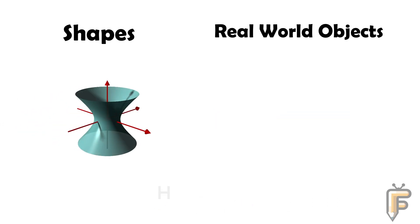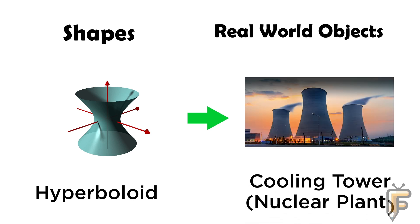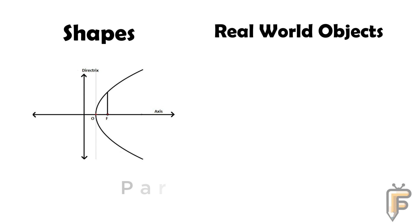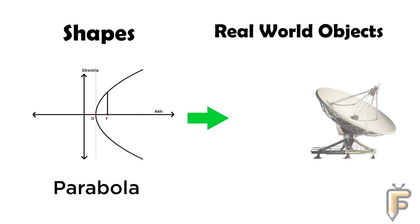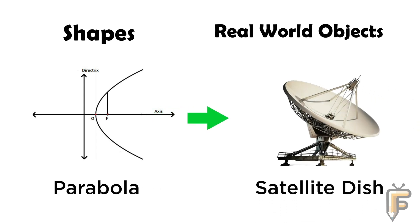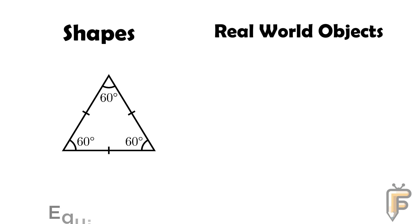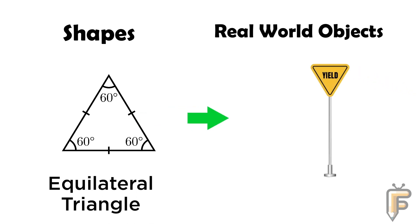Hyperboloid: cooling tower nuclear plant is hyperboloid shape. Parabola: satellite dish is parabola shape. Equilateral triangle: yield sign is equilateral triangle shape.